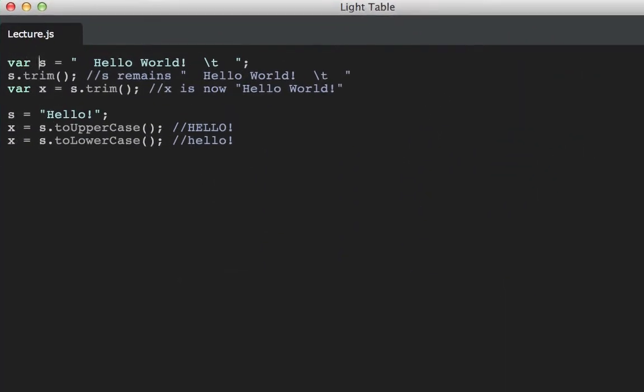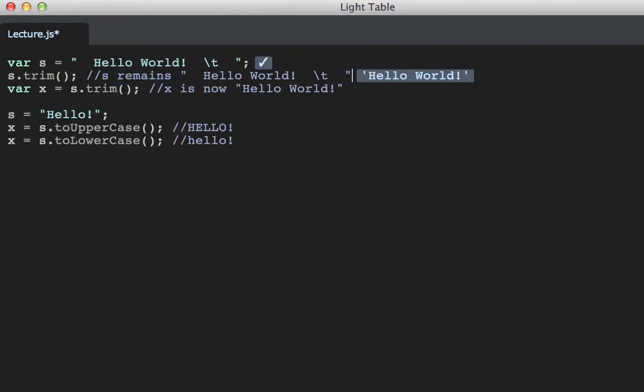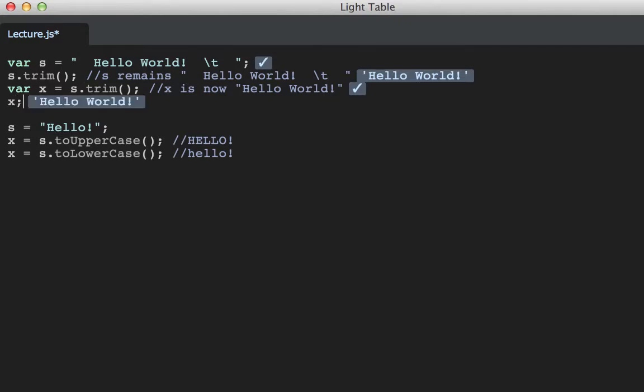Let's take a look at some examples. Here I have a string s in which we've placed the string hello world followed by some leading and trailing white space. Invoking s.trim has no effect on the string s. It's still hello world with leading and trailing white space in it. However, it does return a new string that we can capture into another variable. s.trim is now a new string with hello world with leading and trailing white space removed.